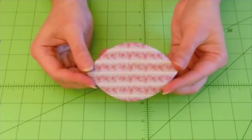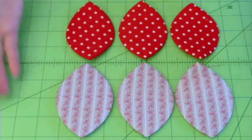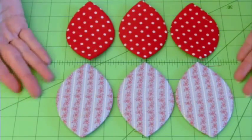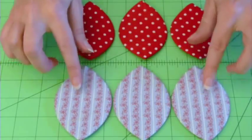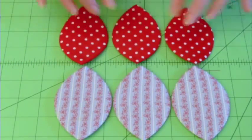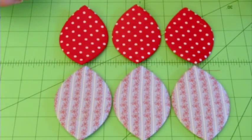And there's my first finished shape. And you'll actually repeat that process five more times so that you have three pieces for the outside of your case and three pieces for the inside of your case.